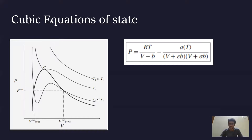Here ε and σ are constants specific to a particular equation. There are several cubic equations of state such as the Soave-Redlich-Kwong equation, the Peng-Robinson equation, and the van der Waals equation. In the van der Waals equation, ε and σ are both zero. The parameters a and b are molecular interaction parameters: b has the units of volume, whereas a represents the intermolecular forces.